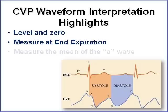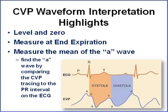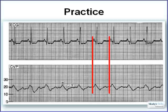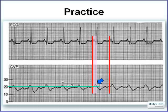The highlights of interpreting your CVP waveform: level and zero to the patient's phlebostatic axis using the stopcock as the air-fluid interface. Measure at end expiration, paying attention to whether your patient is on a vent or spontaneously breathing. Measure the mean of the A wave. For practice: isolate the A, C, and V waves — they're labeled. Draw a line from one P wave down to the CVP, then over to the next, identifying your PR interval. The A wave is right there. Drawing a line across gives a CVP of about 20.